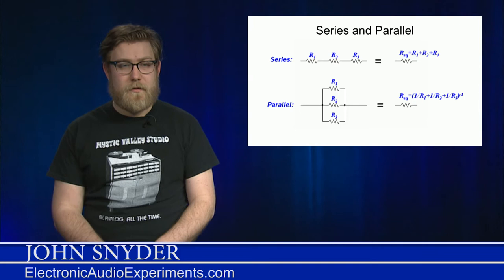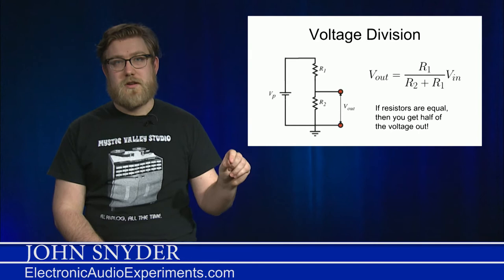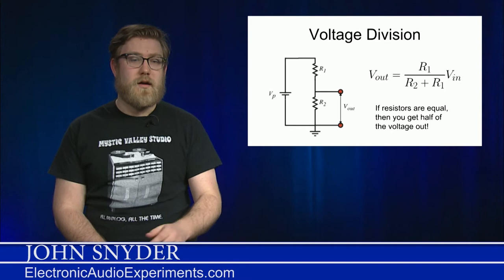Another common configuration using resistors is something we call a voltage divider. If you have two resistors taken together with a voltage source, and then you measure the voltage at the midpoint between those two resistors, you're going to get a new voltage given by the equation here. V out is equal to R1 over R2 plus R1 times V in.